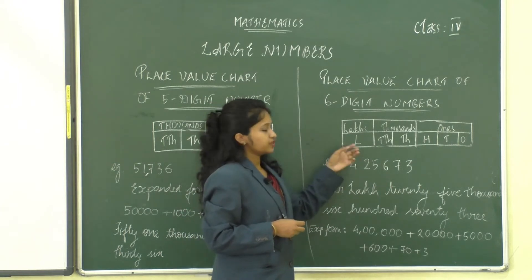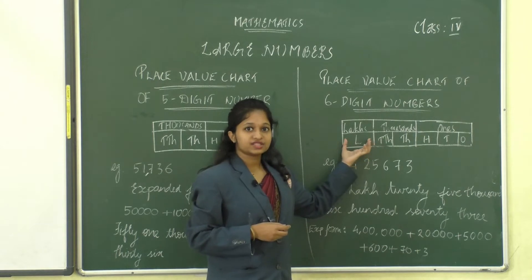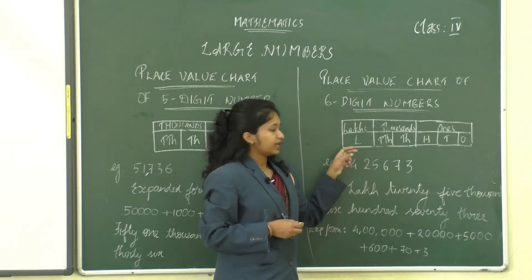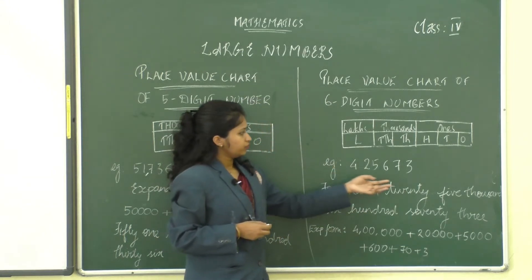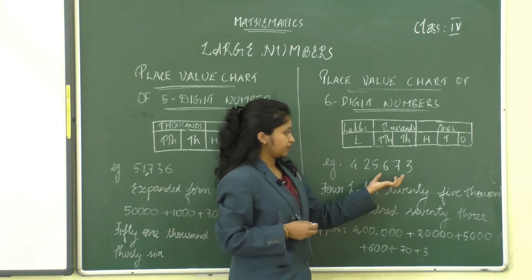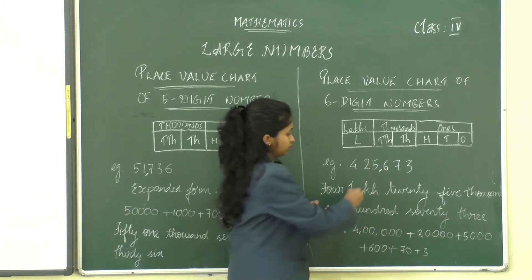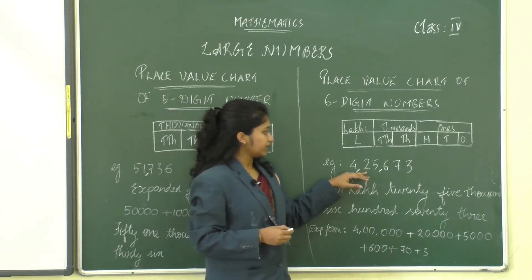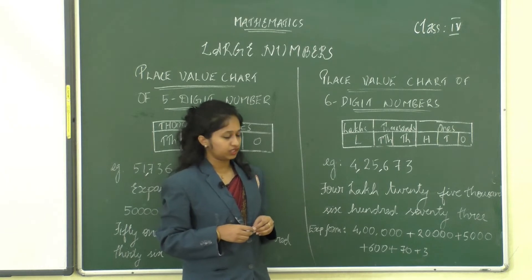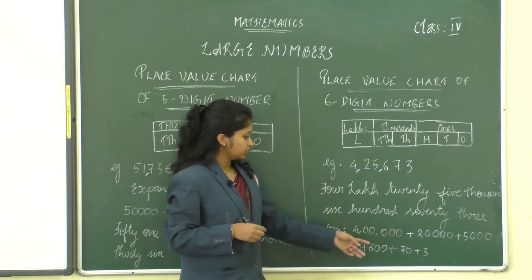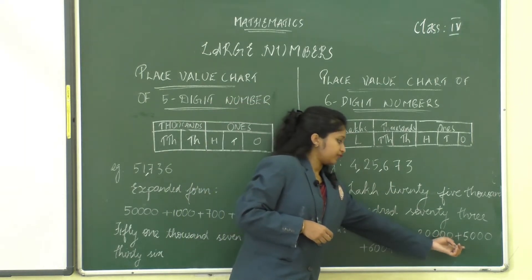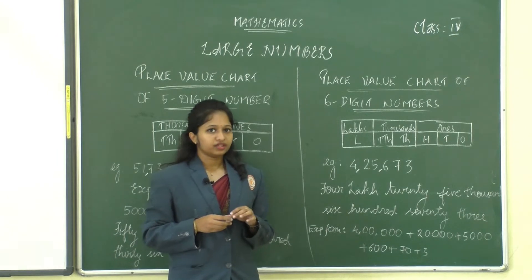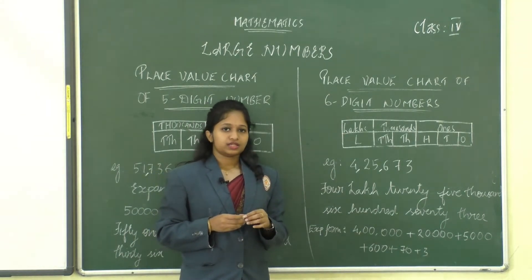Now we'll move on to the place value chart of six digit numbers. For a six digit number there is one more place — that is lakhs. So we have ones, tens, hundreds, thousands, ten thousands, and lakhs. Here I've shown an example. We divide it using the periods: ones period, thousands period, and lakhs. We read this number as four lakh twenty-five thousand six hundred seventy-three. The expanded form is 4,00,000 + 20,000 + 5,000 + 600 + 70 + 3. Remember, when you read a number, if zero comes in between, you just skip that period.